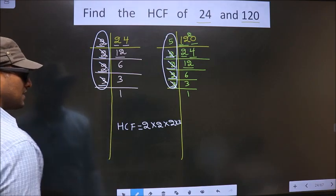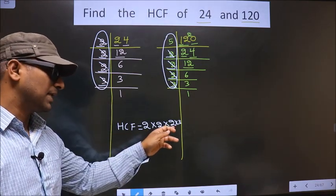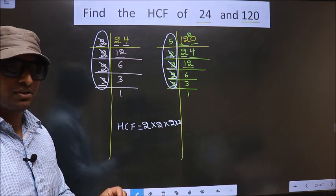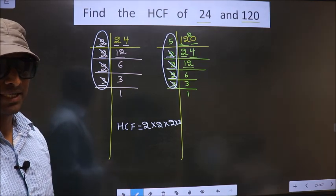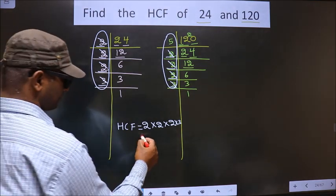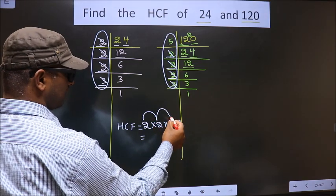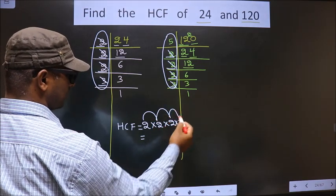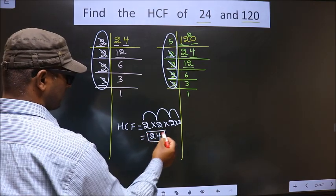No more numbers are left. Therefore, you multiply all these numbers. Whatever number you get, that is your HCF. So let us multiply. That is 2 into 2, 4. 4 into 2, 8. 8 into 3, 24. So 24 is our HCF.